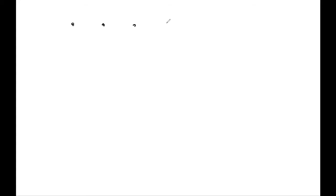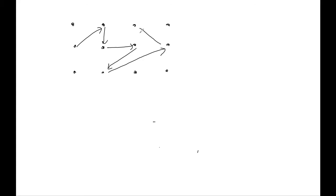We assume that the average velocity of an electron emerging from a collision is given by whatever thermal equilibrium value we expect. The picture of electrons moving in a lattice of ions in the Drude model is as follows: an electron comes in, hits an ion, collides, and emerges in a completely random direction with a velocity uncorrelated with the velocity before. It travels, collides again in a random direction, and so on — this is the picture of electrons scattering off ions in the Drude model.